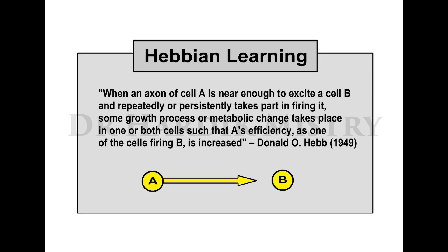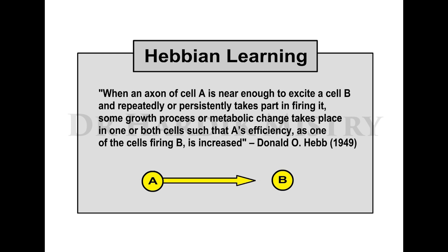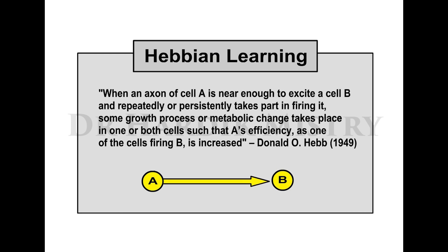Hebb's other rule, also known as Hebbian learning, states: when an axon of cell A is near enough to excite cell B and repeatedly or persistently takes part in firing it, some growth process or metabolic change takes place in one or both cells such that A's efficiency as one of the cells firing B is increased. When a presynaptic neuron repeatedly participates in causing the postsynaptic neuron to fire, their synaptic connections become strengthened. When the presynaptic neuron repeatedly fails to elicit firing of the postsynaptic neuron, their synaptic connections become weakened.